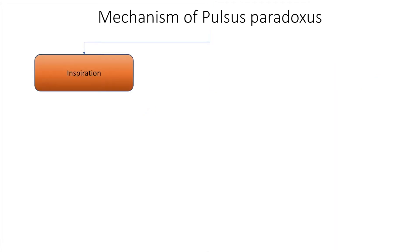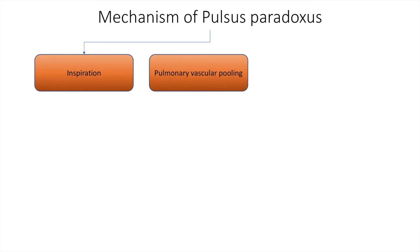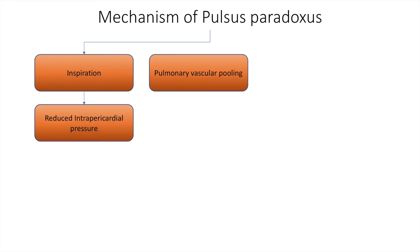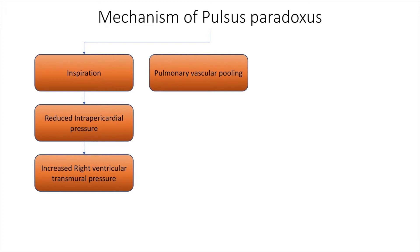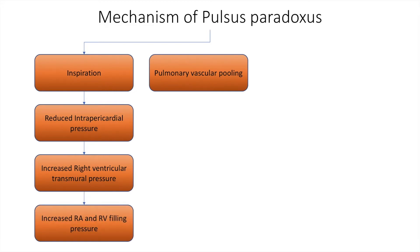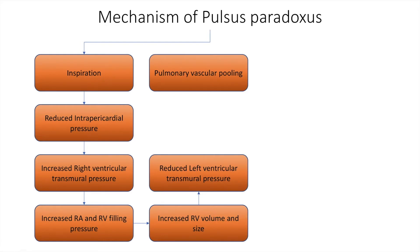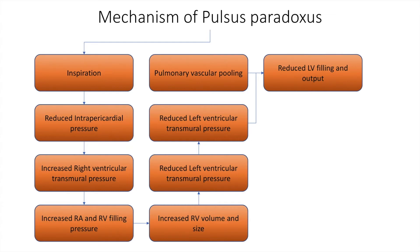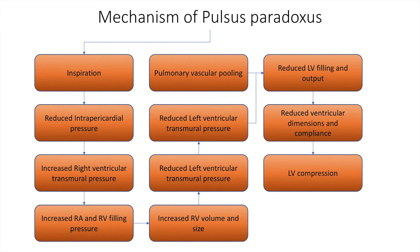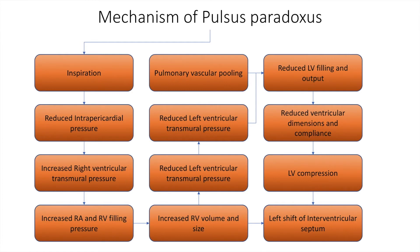On deep inspiration, there is pulmonary vascular pooling because the size of the thoracic cage is increased and venous return to the heart increases. There is reduced intrapericardial pressure in the heart, which increases the right ventricular transmural pressure, resulting in increased right atrial and right ventricular filling pressure, and increased right ventricular volume and size. This reduces the left ventricular transmural pressure, which reduces left ventricular filling, resulting in reduced ventricular dimensions and compliance, causing left ventricular compression, and a left shift of the interventricular septum.